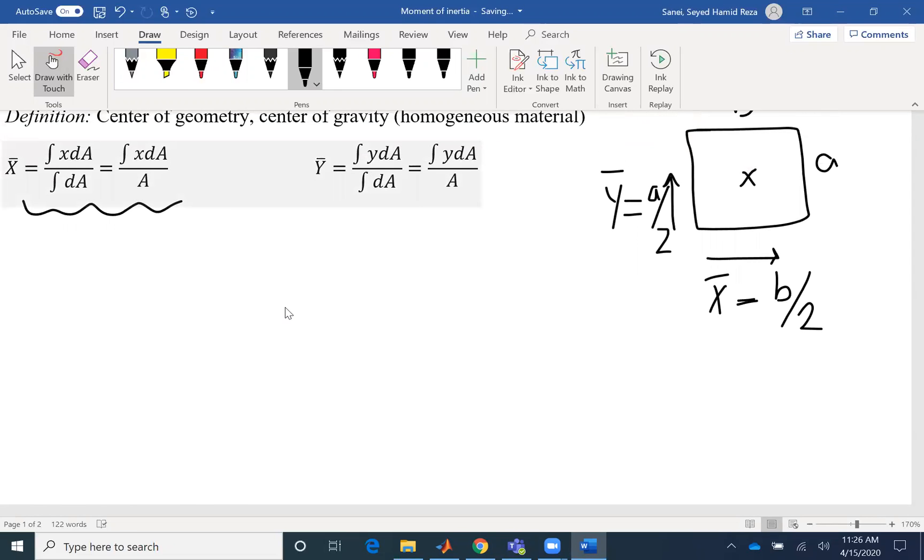And if we have a quarter of a circle with radius R, X bar would be 4R over 3 pi and Y bar would be the same.